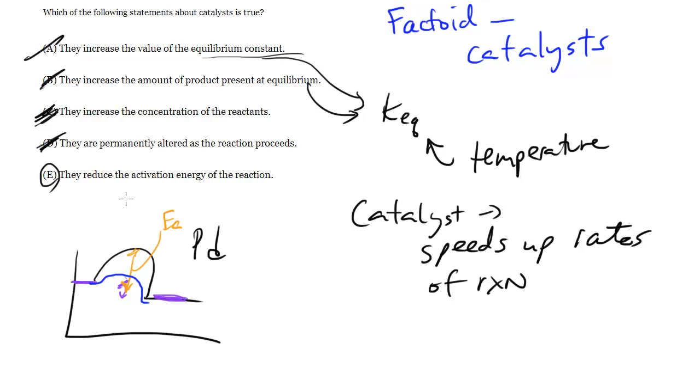So E is true. And these are the facts you definitely want to remember. Catalysts can't change the equilibrium constant, doesn't really affect the concentrations of anything. It is not permanently altered, so it stays the same throughout the entire reaction. And it reduces the activation energy of the reaction. That's how it speeds it up.